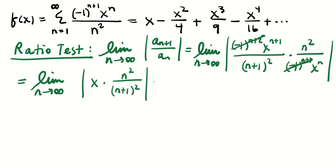As n→∞, the fraction n²/(n+1)² approaches 1, leaving |x|. By the ratio test, if |x| < 1 the series converges absolutely, so the interior of the interval of convergence is (−1, 1). Now we just need to check the endpoints.